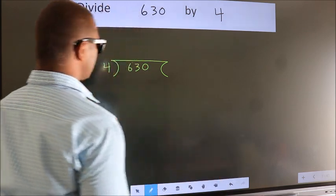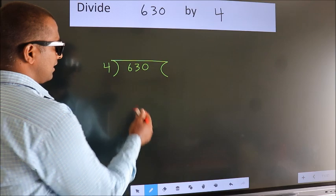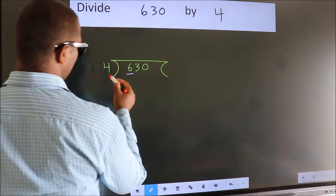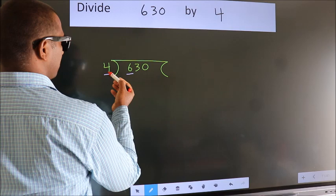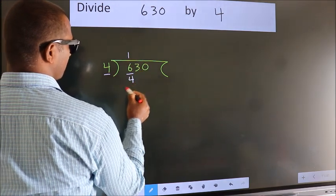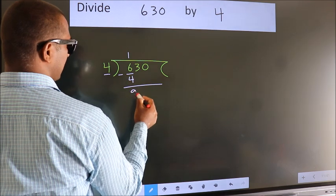This is your step 1. Next, here we have 6, here 4. A number close to 6 in 4 table is 4 ones, 4. Now, we should subtract. We get 2.